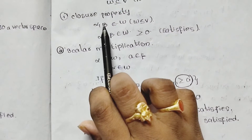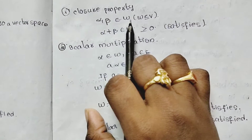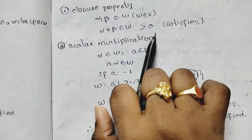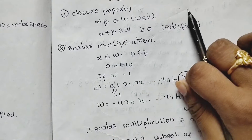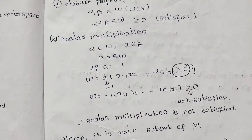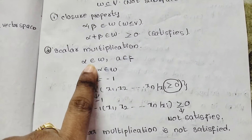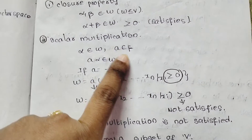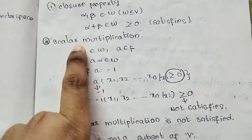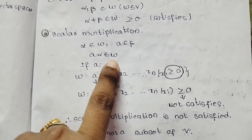So, for the closure property to be satisfied, alpha plus beta must belong to omega. For scalar multiplication, A times alpha should belong to omega, where A belongs to field F.